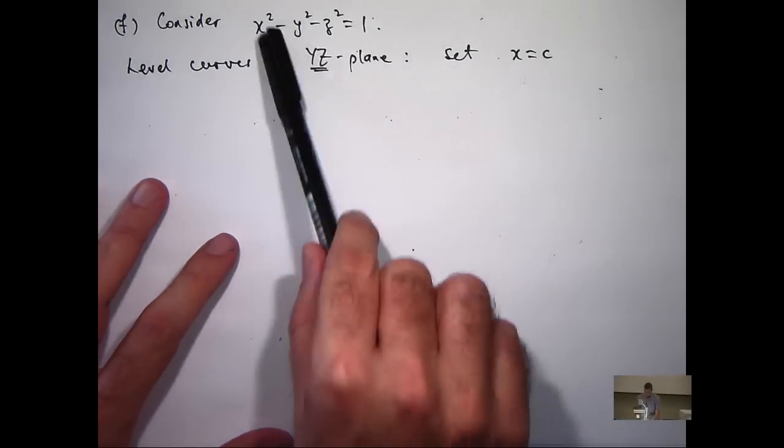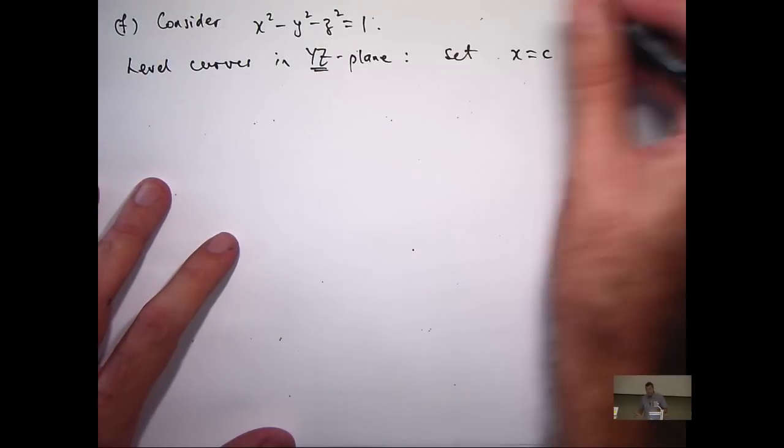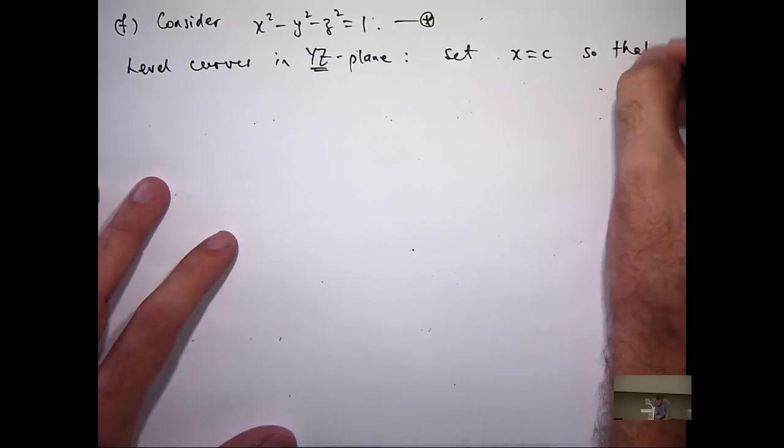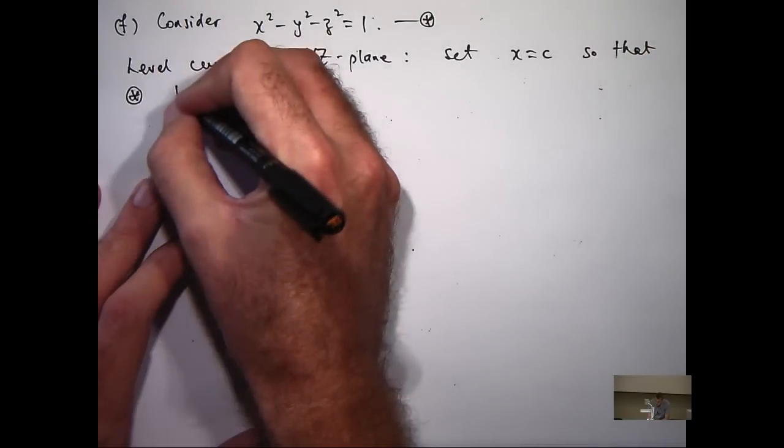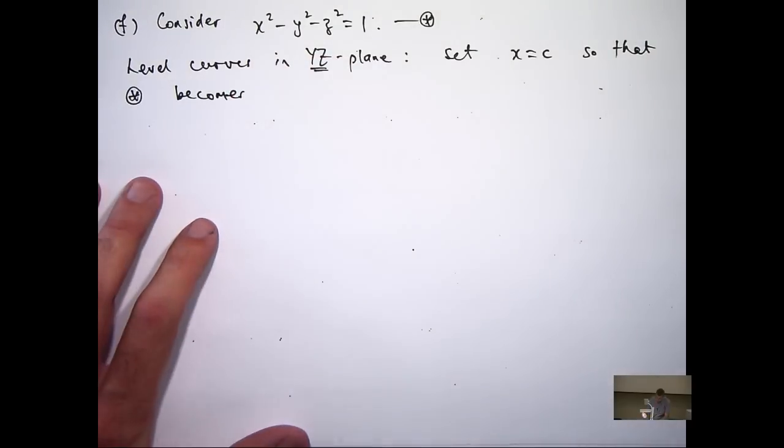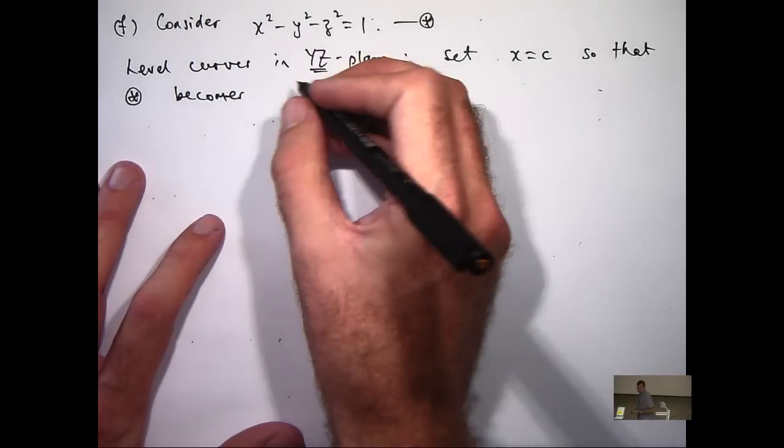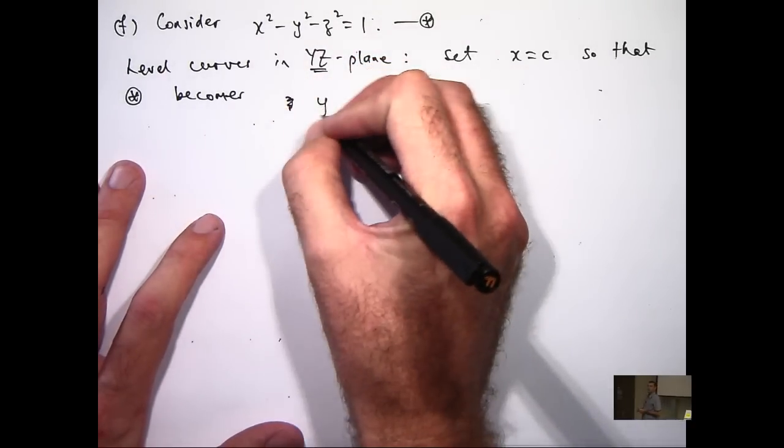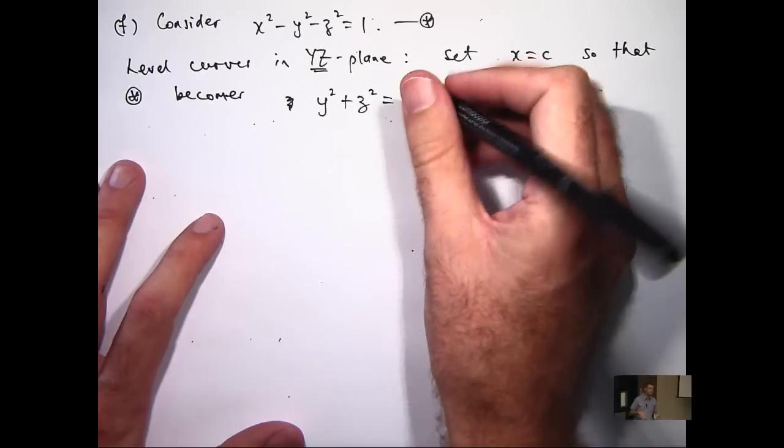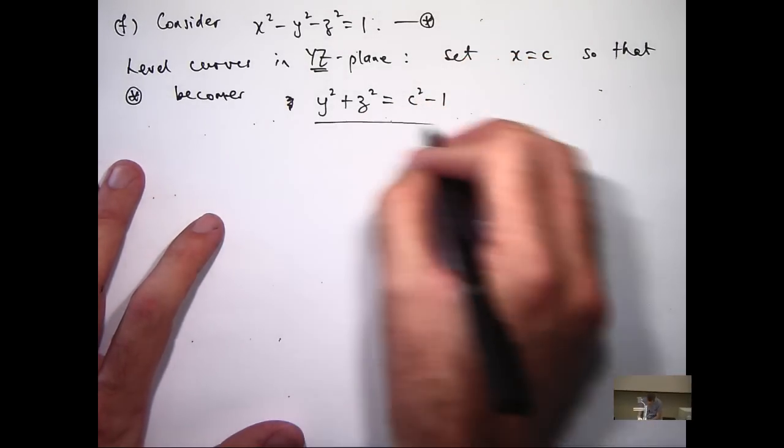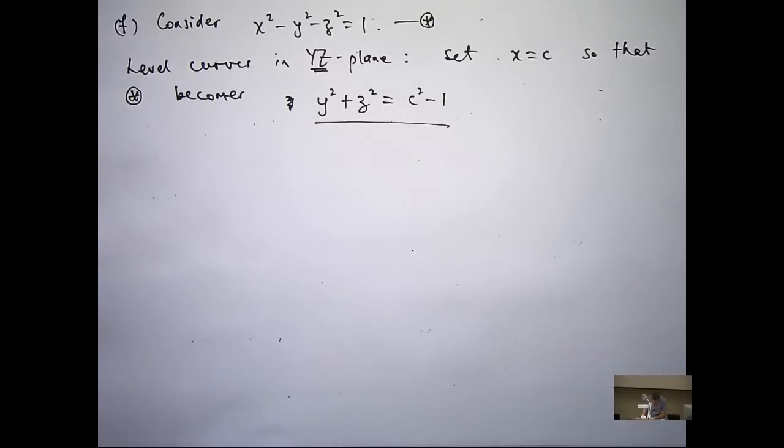So if I rearrange this, I'll get something like the following. I'm just going to rearrange a little bit and I'm going to get y squared plus z squared equals c squared minus 1, where c is a constant.